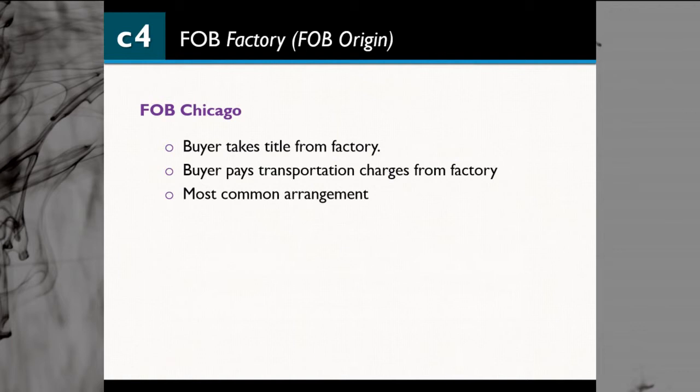For example, if you see 'FOB Chicago,' that means the manufacturer is in Chicago, and all responsibilities related to the title and charges will be part of the buyer, not the vendor. So what you see right next to FOB determines who is in charge of responsibility for the title or the transportation charges.